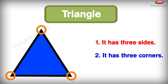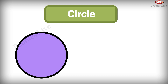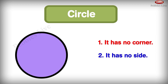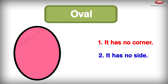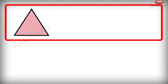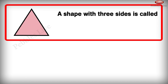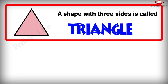Circle: it has no corner and no side. Oval: it has no corner and no side. A shape with 3 sides is called a triangle.